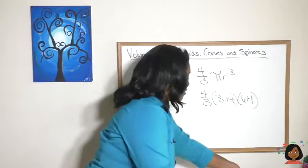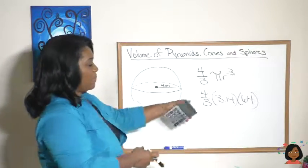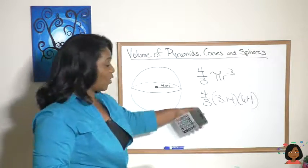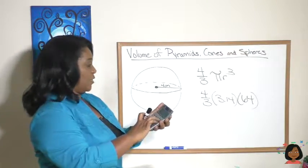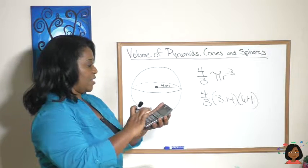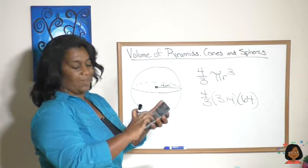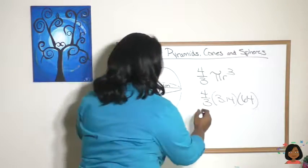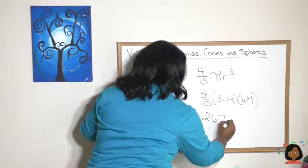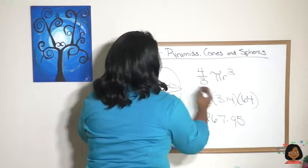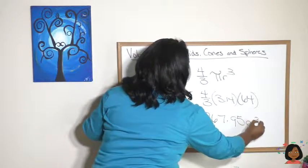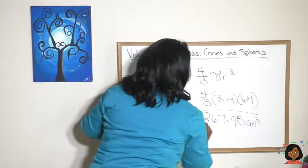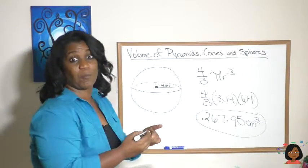I grabbed the wrong one, I grabbed my phone. Let's do it. We're going to multiply 4 × π × 64 and divide all of that by 3. Four times 3.14 times 64 divided by three is 267.95 centimeters. And remember for volume, the label is always cubed.